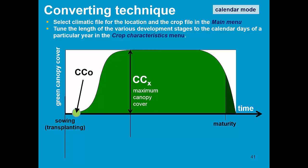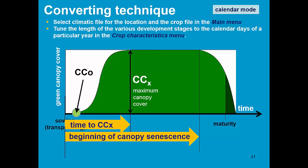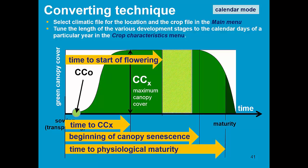In calendar mode, you tune the length of the various development stages. We know that it takes so many days to reach maximum canopy cover, beginning of senescence, time to physiological maturity, time to flowering, and the duration of flowering. This is all expressed in calendar days. Now we are going to switch from calendar mode into growing degree mode.